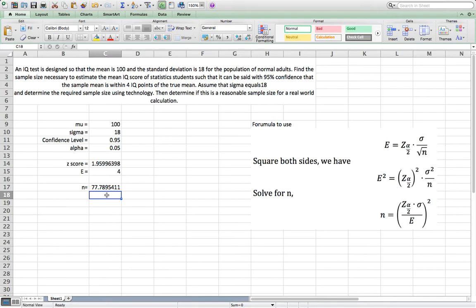So that means in order to construct a 95% confidence interval with margin error 4 for this problem, we need a sample size of at least 78.